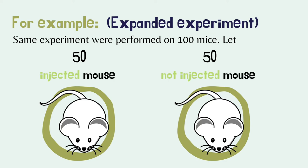In an expanded experiment, the same experiment was performed on 100 mice — 50 injected and 50 not injected. Scientists address problems regarding weak evidence by increasing the size of the experimental group and the control group. Suppose that after two months, all 50 injected mice developed tumors and none of the control subjects did.